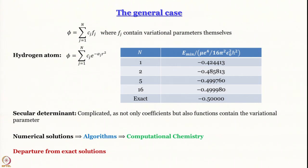We have slowly started going away from exact solutions, changing the exact 1s orbital by introducing variational parameters more significantly. Eventually we will reach a situation where we do not even have to start from exact solutions — any kind of orthonormal set will do. For now we close this discussion, and we are ready to resume our discussion of many-electron atoms, starting with helium.